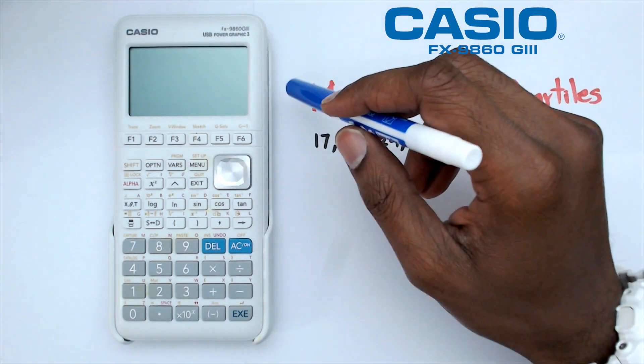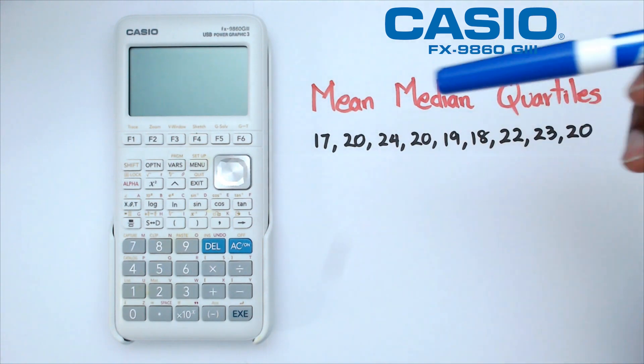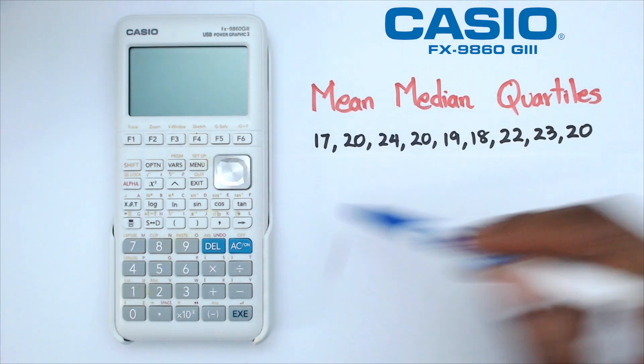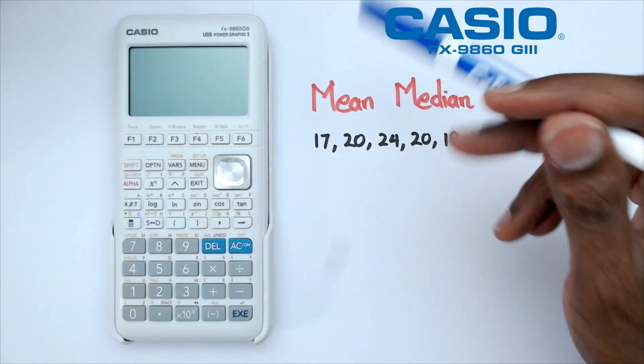Hey folks, welcome to another how-to Casio video. In this video we're going to be looking at how to find the mean, the median, and the quartiles for this particular data on this Casio calculator. So without further ado, let's get started.